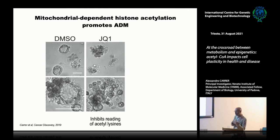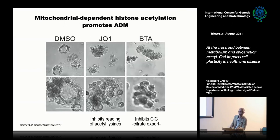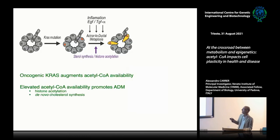To understand whether this was due to acetyl-CoA production, we first tried ACLY inhibitors, but they are historically very poor compounds and didn't work. Instead we used a compound called BTA, which blocks the export of citrate from the mitochondria, thereby limiting ACLY activity by substrate deprivation. Treating cells with BTA, we were able to really block ADM ex vivo. At this point we demonstrated that histone acetylation facilitates acinar-to-ductal metaplasia ex vivo.